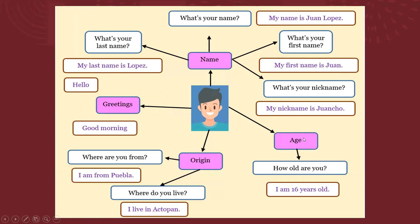Now, talking about age, you can say: 'How old are you?' — 'I am 16 years old.' And from origin: 'Where do you live?' — 'I live in Actopan.' 'Where are you from?' — 'I am from Puebla.'